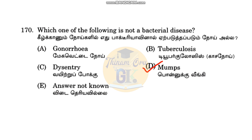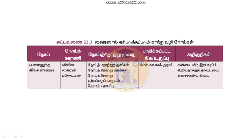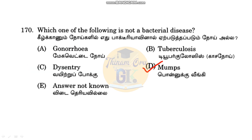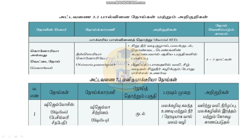Polio is a viral disease, not a bacterial disease. For mumps — what virus causes it? Myxovirus causes mumps, which is a viral disease. Gonorrhea is a bacterial sexually transmitted infection. So in the options: tuberculosis, dysentery (Shigella/Sigella species) are bacterial diseases.